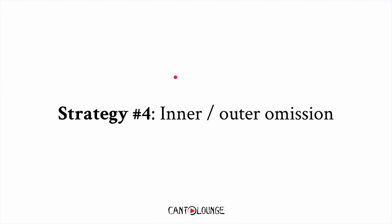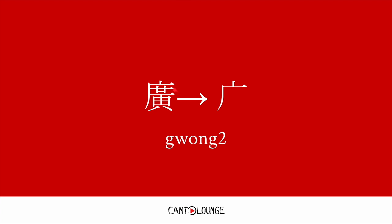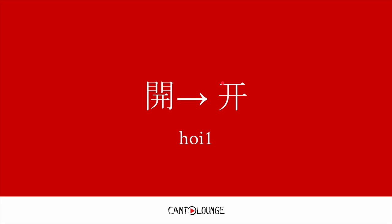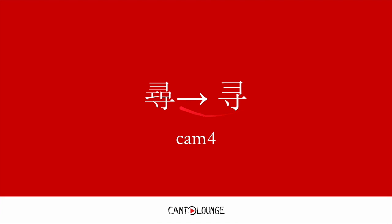Strategy number four was to omit either the inner bit or the outer bit of the character. For example, 廣 — they got rid of this entire inner bit, which is probably the sound component, entirely, to give 廣, meaning wide or broad. 開, meaning open — they got rid of the outside bit. And 沉 — they got rid of the middle bit here to give this character, 田, which means to find.